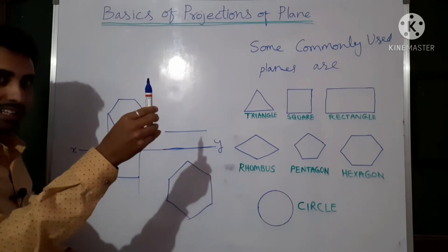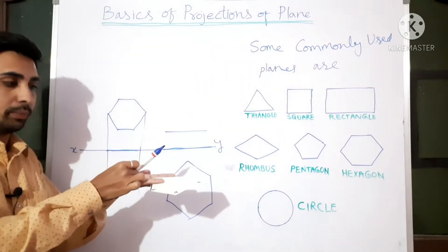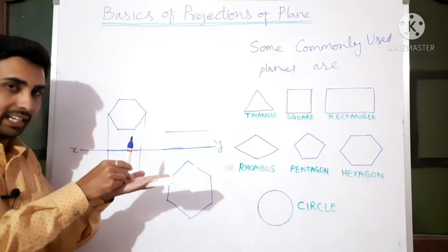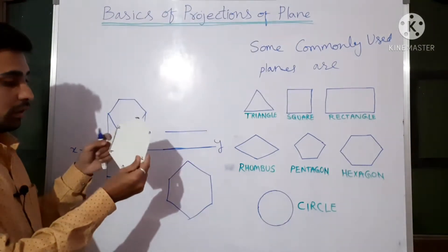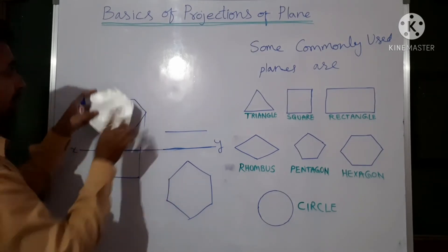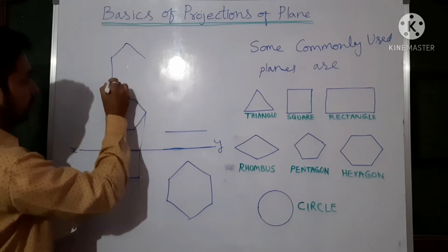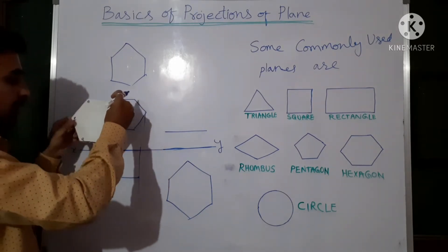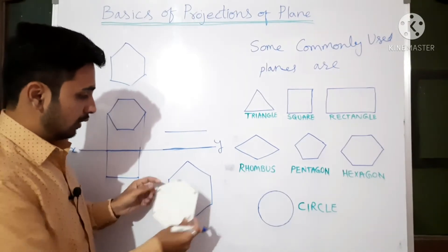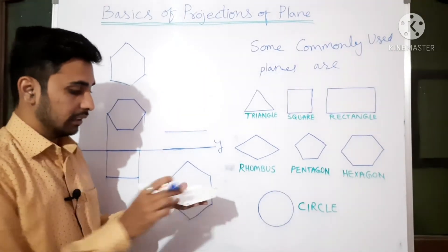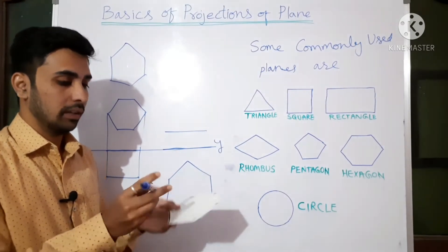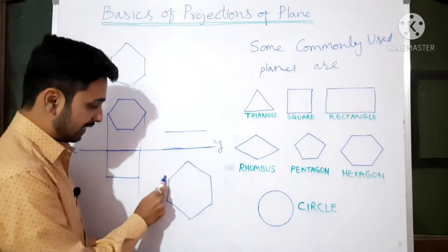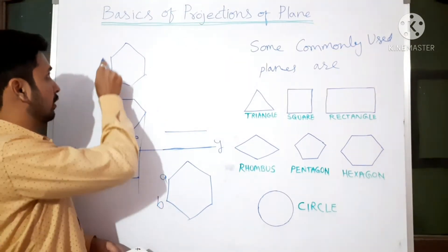If they say one edge of the hexagon should be perpendicular to HP, you treat that edge as a line. A line perpendicular to HP is like this, inclined to HP like this, parallel to HP like this. So if edge AB is perpendicular to HP, the hexagon shape will appear accordingly. If edge is parallel to HP it is horizontal; if perpendicular it is vertical. Similarly, edge AB may be perpendicular to VP.